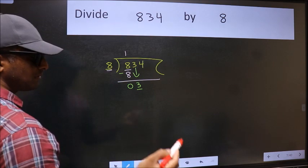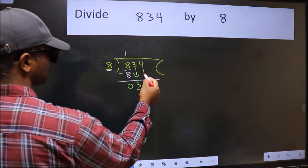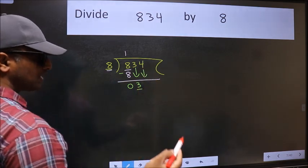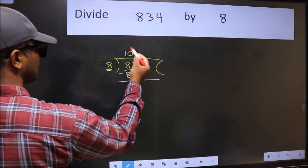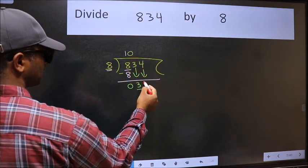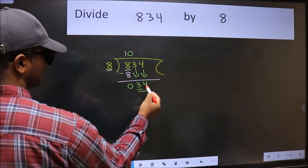So we should bring down the second number, and the rule to bring down the second number is we should put 0 here. Then only we can bring this number down. Now 34.